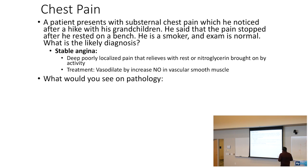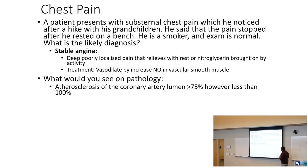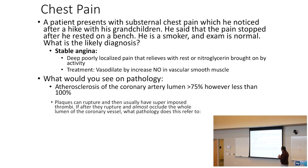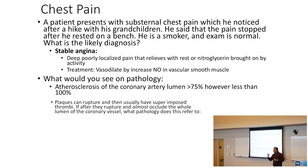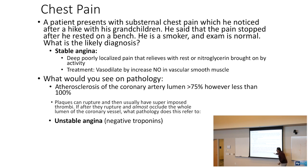What would you see on pathology in angina? You're going to get atherosclerosis of the coronary artery lumen greater than 75% but less than 100%. These plaques can rupture and usually get superimposed thrombi. If they rupture and almost — but not 100% — occlude the whole lumen of the coronary vessel, that's going to be unstable angina. Unstable angina and N-STEMI are two pathologies that represent almost occlusion.